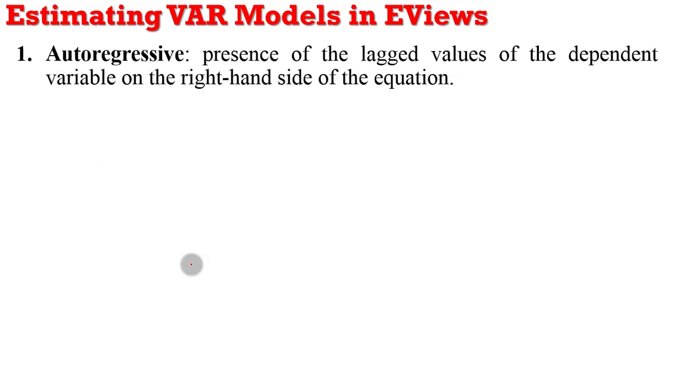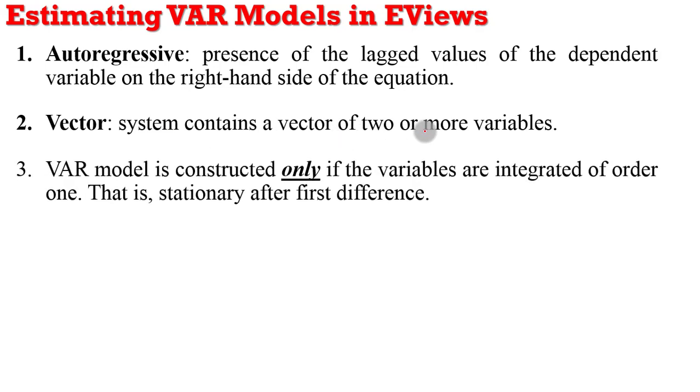The word autoregressive refers to the presence of the lagged values of the dependent variable on the right-hand side of the equation, while the word vector simply implies that the system contains a vector of two or more variables. So when do you construct a VAR model? You construct a VAR model only if the variables are integrated of order one, that is, your variables are stationary after first difference.